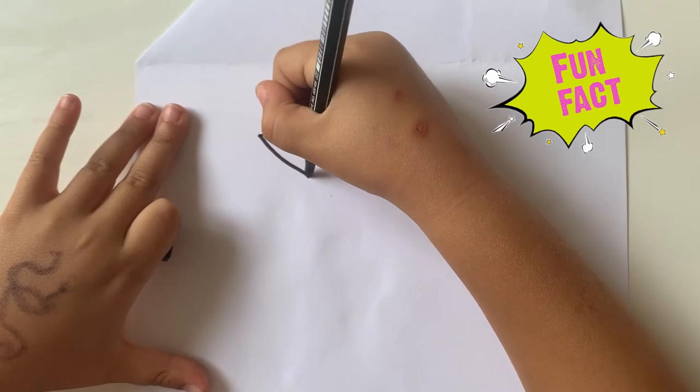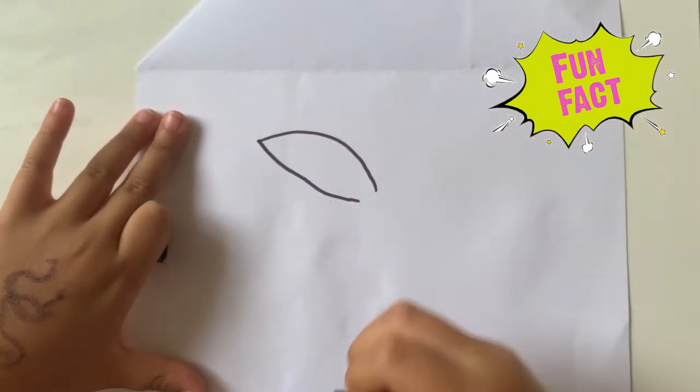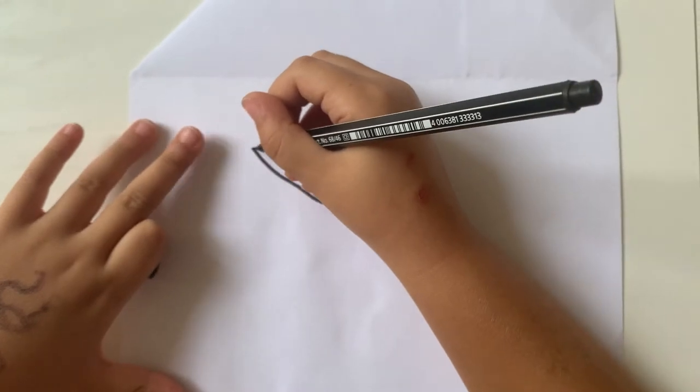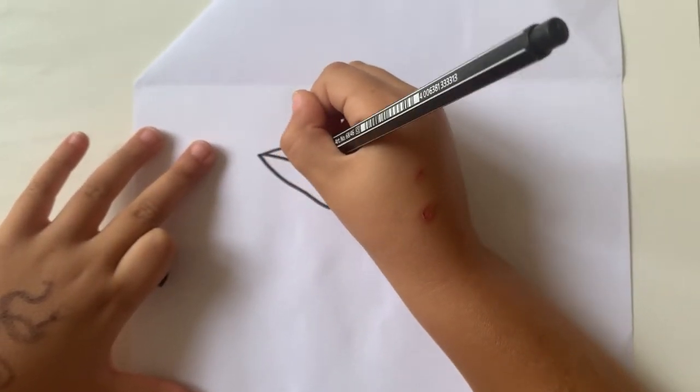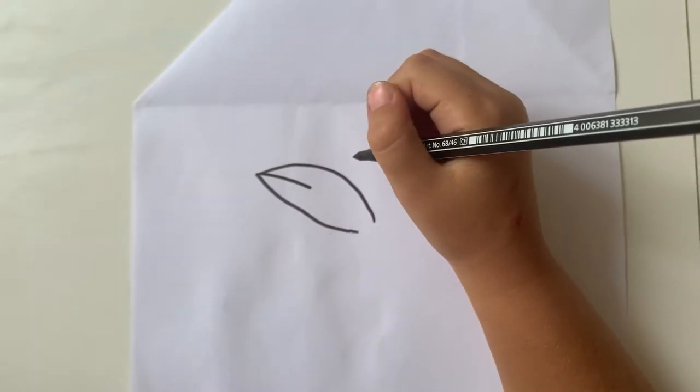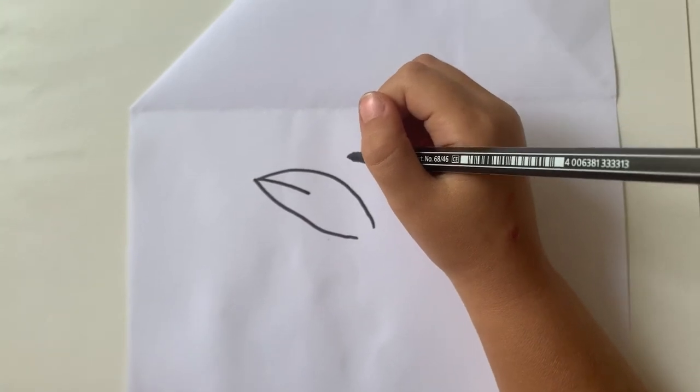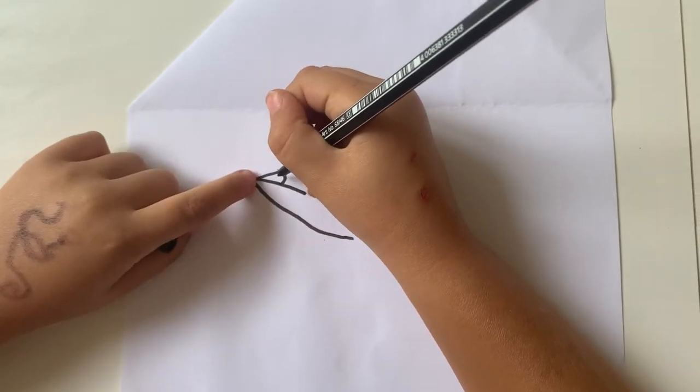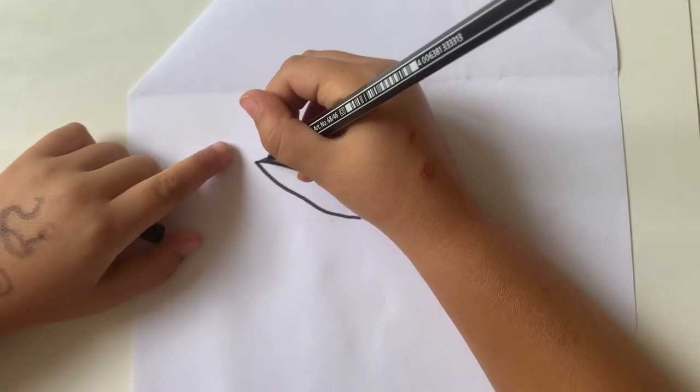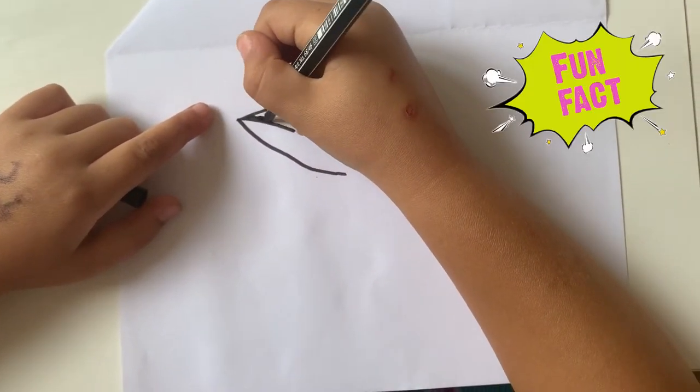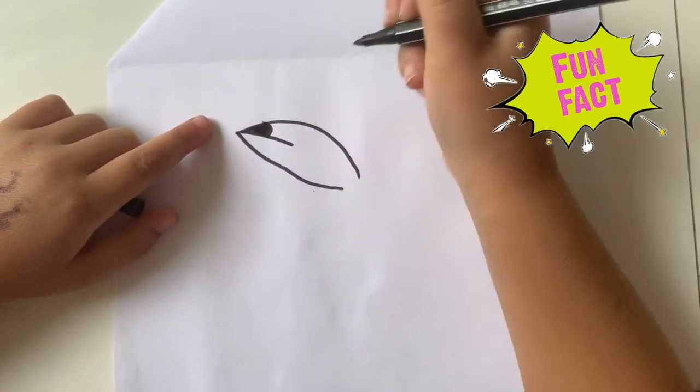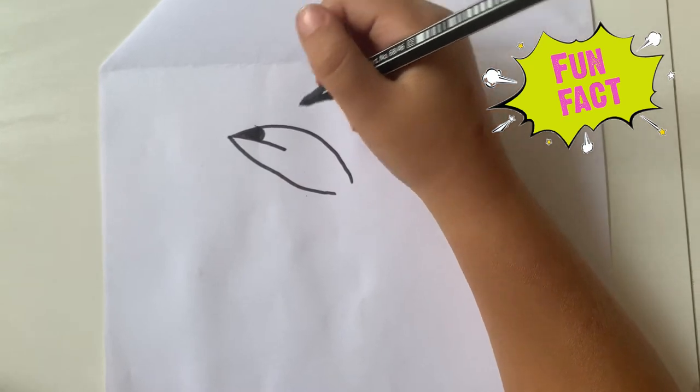Toucans have beaks nearly half of their length. We draw the little beak and a little line in it. A little black place like an ice cream cone at the end of the beak's top. Baby toucans don't have a large bill at birth. It grows as they develop.